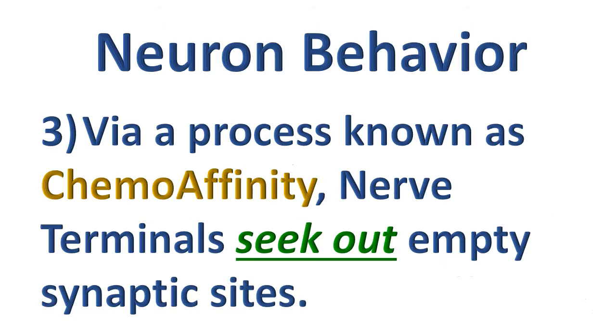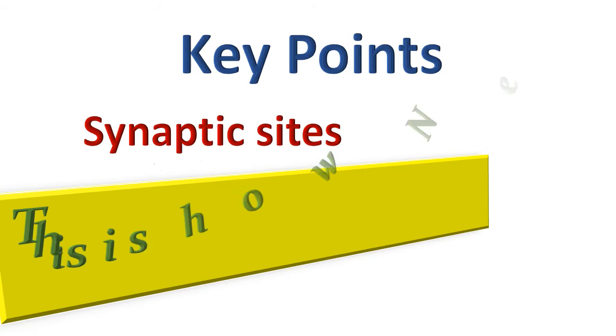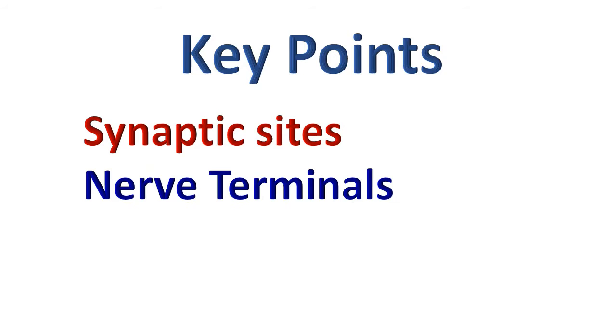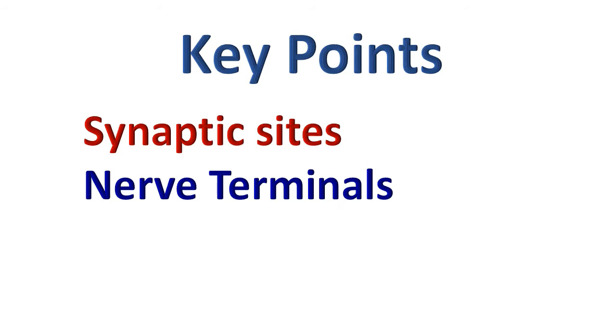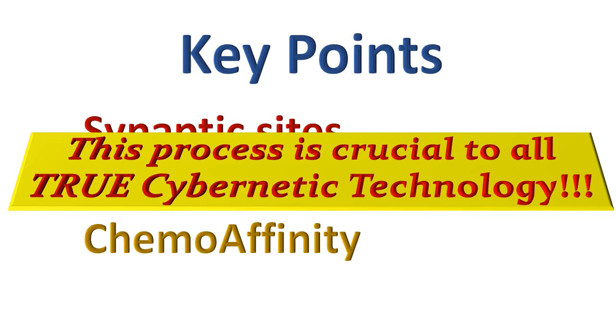The key points to remember here are: 1. The synaptic sites. This is how neuron terminals know where to connect. 2. The nerve terminals themselves. These lead back to the brain, which is where the perception process of our senses actually happens. In other words, this is where the sensations that we directly know as our senses actually live. 3. The process of chemo affinity. Without this, the concept of true cybernetic technology, like that described in our science fiction stories would not be feasible.